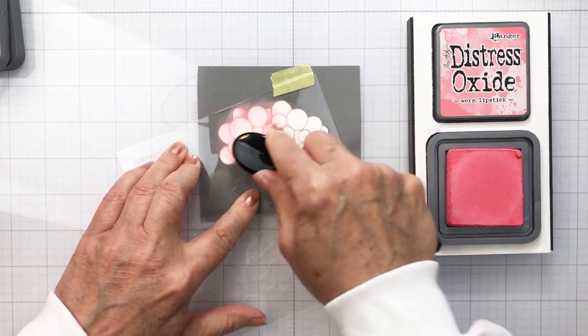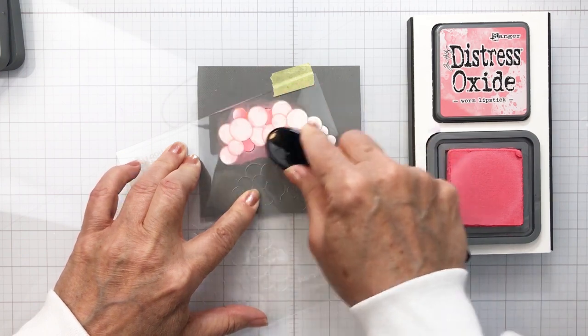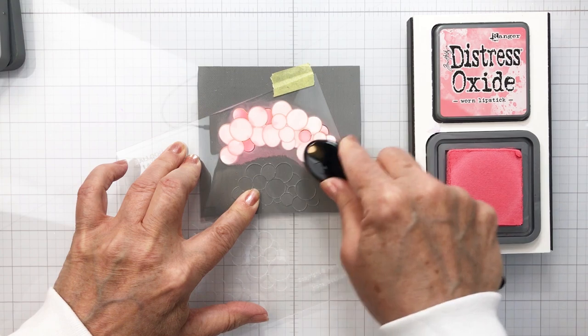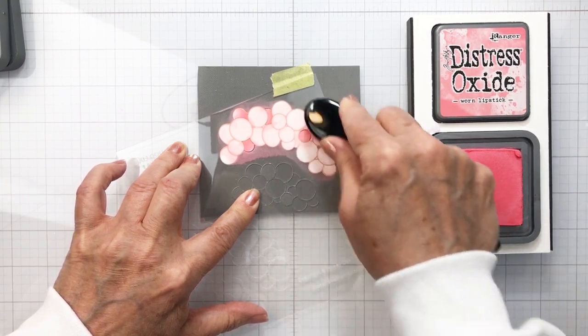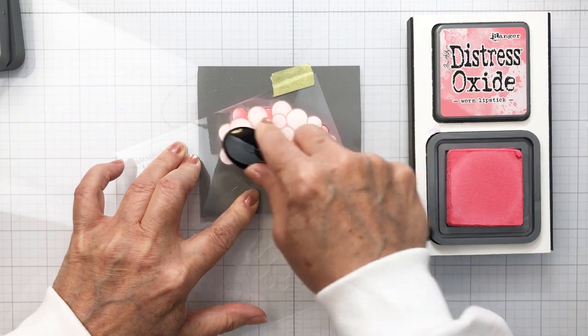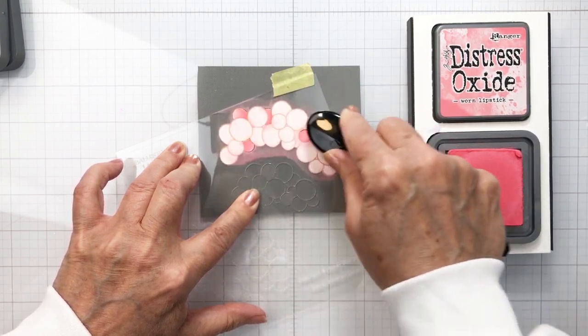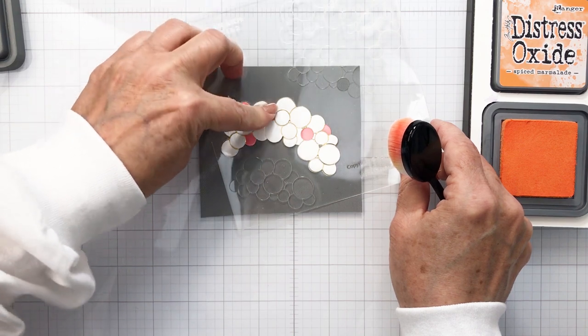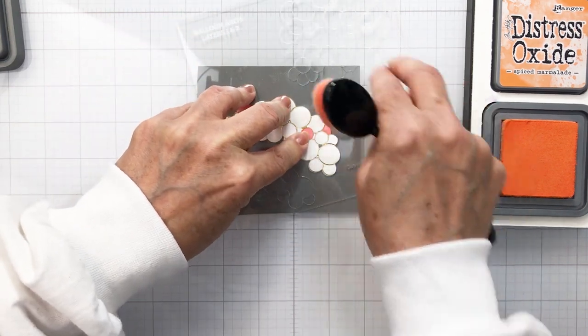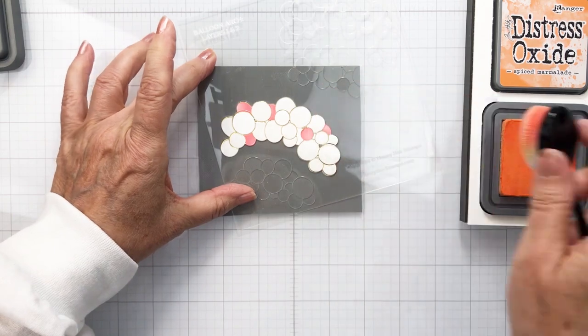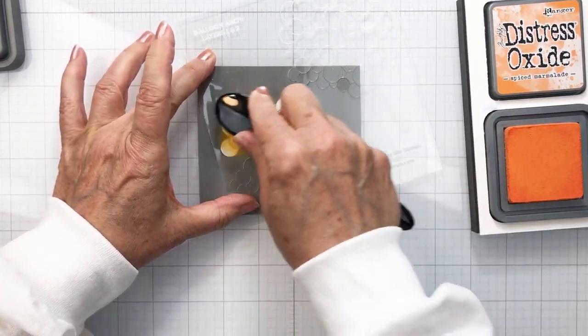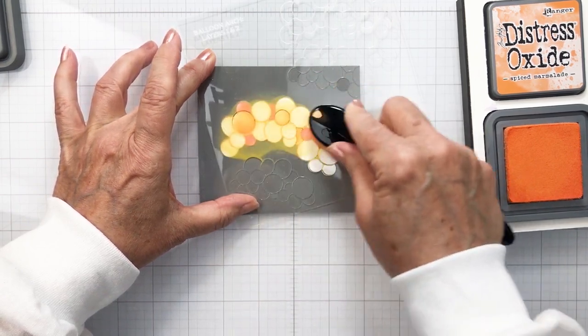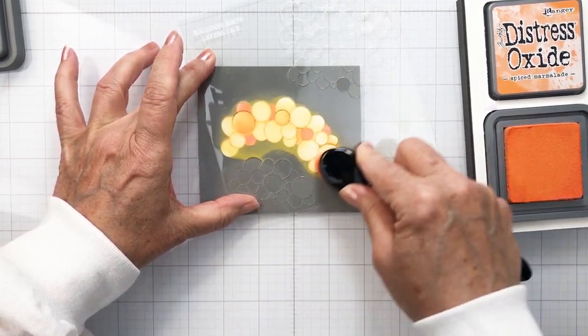Now I'm just going to take my worn lipstick distress oxide ink and I'm going to go ahead with my Honey Bee blending brush and blend over top of the stencil. Only the open areas on the stencil are going to take the color that I'm blending on. Only certain balloons at this point are actually going to be colorized, and then I'm going to shift the stencil to the bottom area of this same stencil.